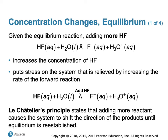Looking at this in the context of a reaction: HF plus water, with forward and reverse arrows, gives F⁻ and H₃O⁺. If we increase the concentration of HF, our hydrofluoric acid, this puts stress on the system that will be relieved by increasing the rate of the forward reaction. Le Chatelier's principle states that if we add more reactants, the rate of the forward reaction will increase to produce more products — that is how we reestablish equilibrium.